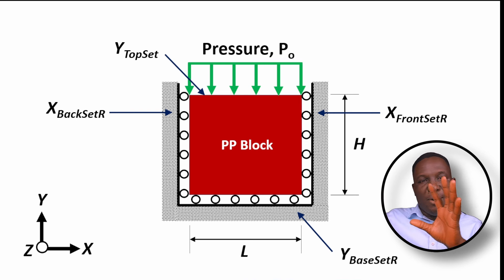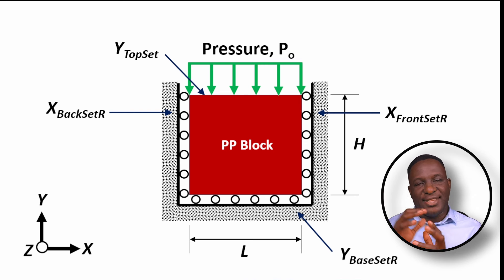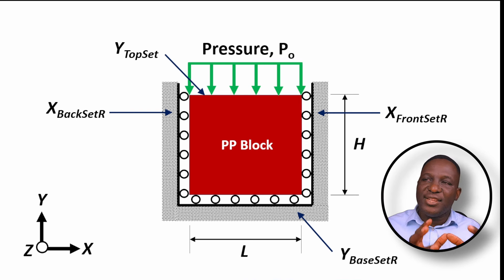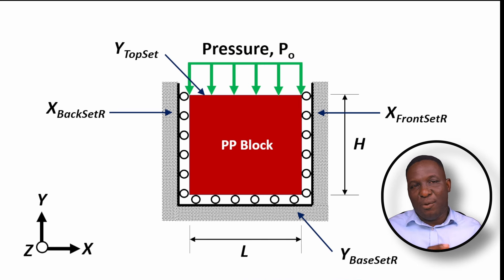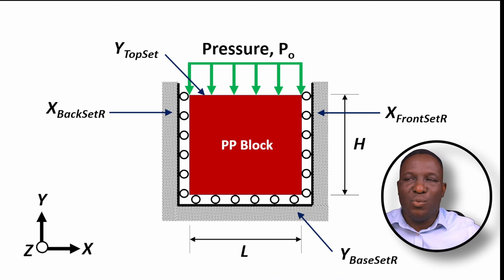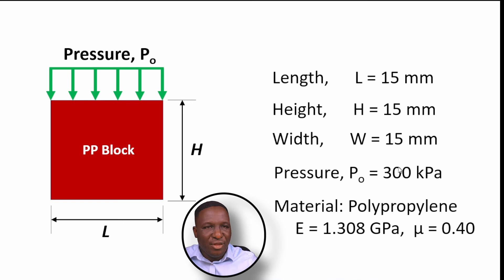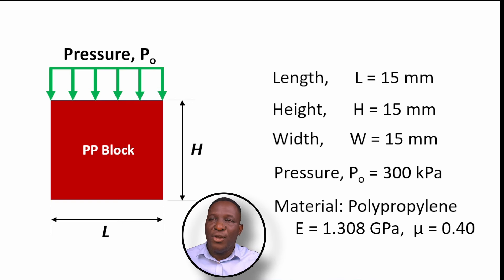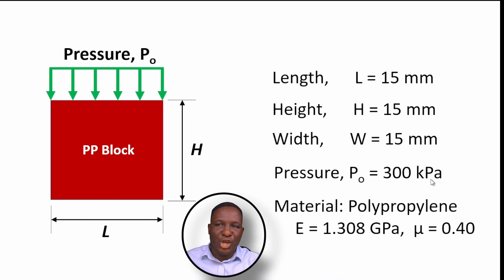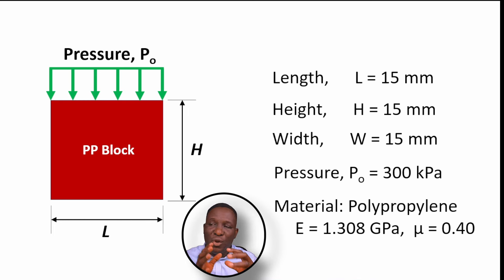This is in 2D, but we'll also show this in three dimensions. Once we run the simulation, we extract the testing properties needed for this study. The length, height, and width of the polypropylene block will be 15 millimeters. The pressure load applied is 300 kilopascals.